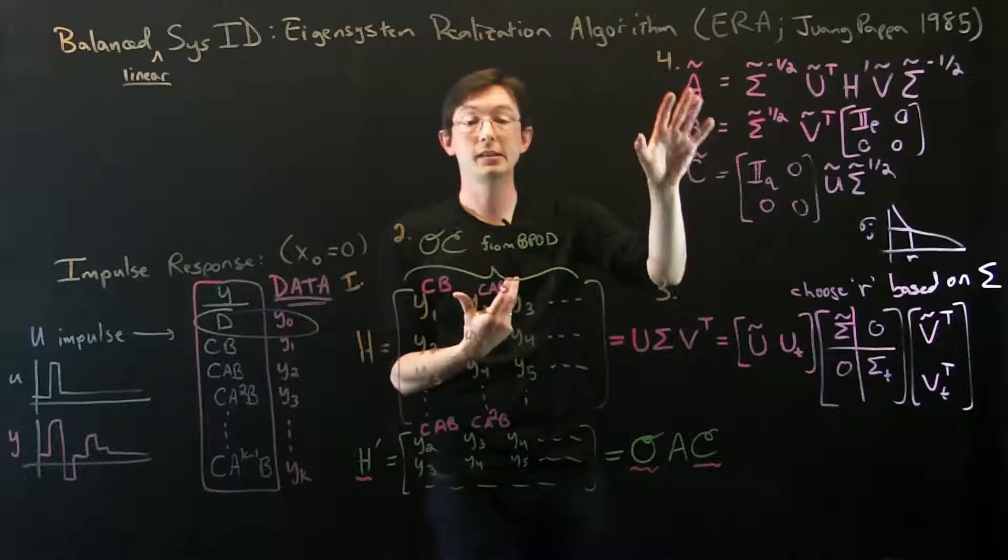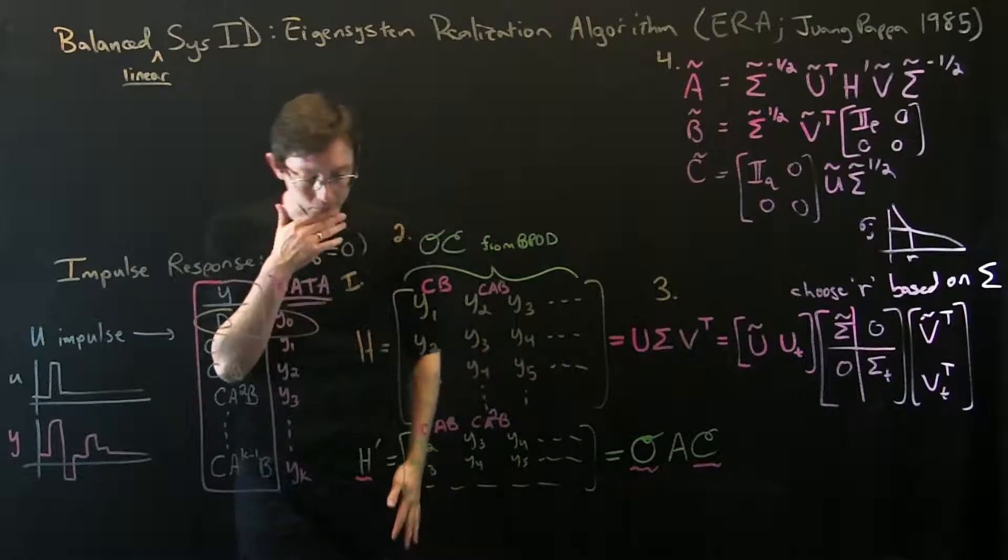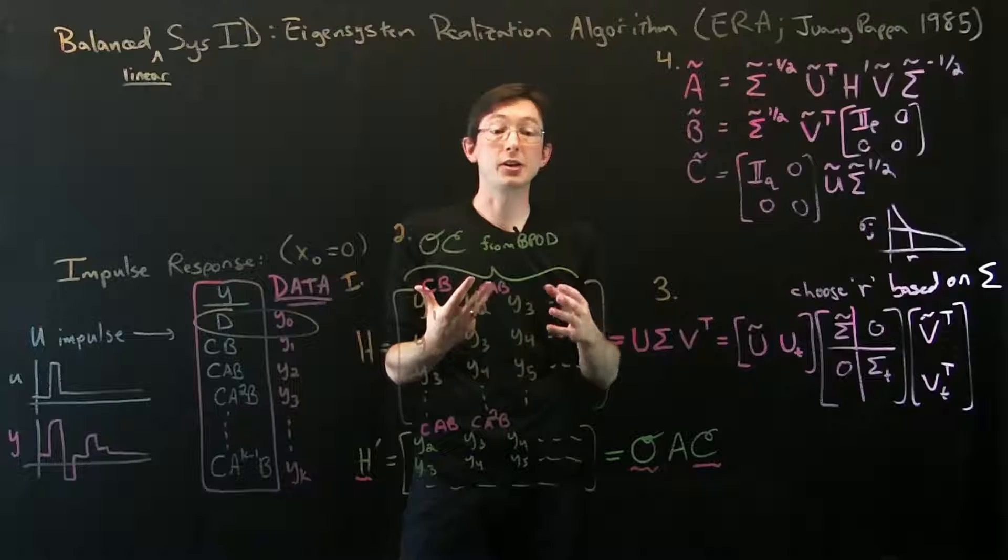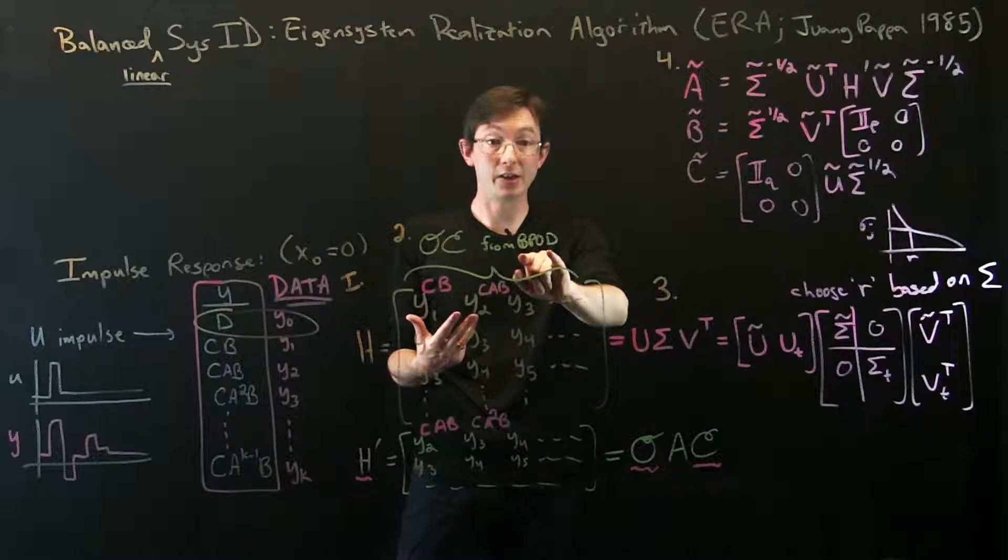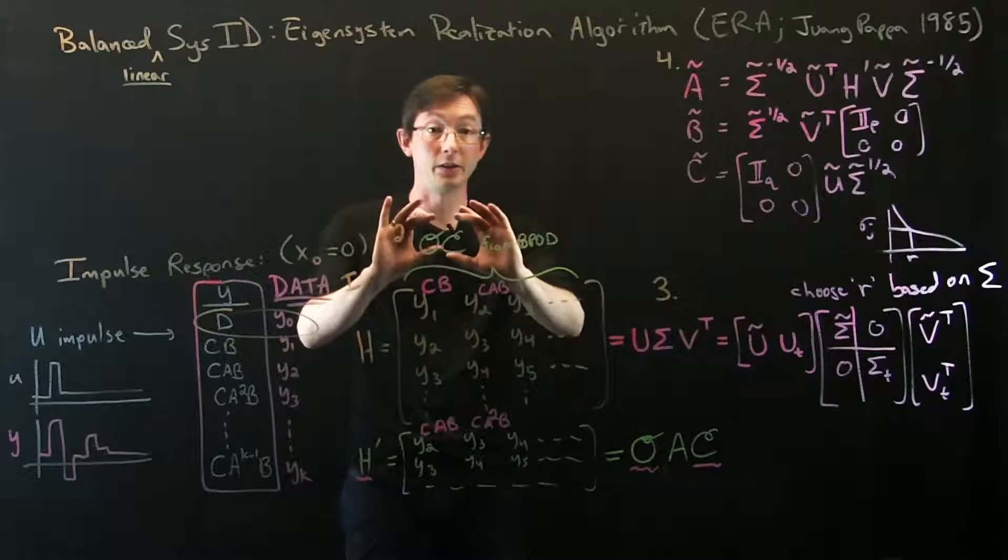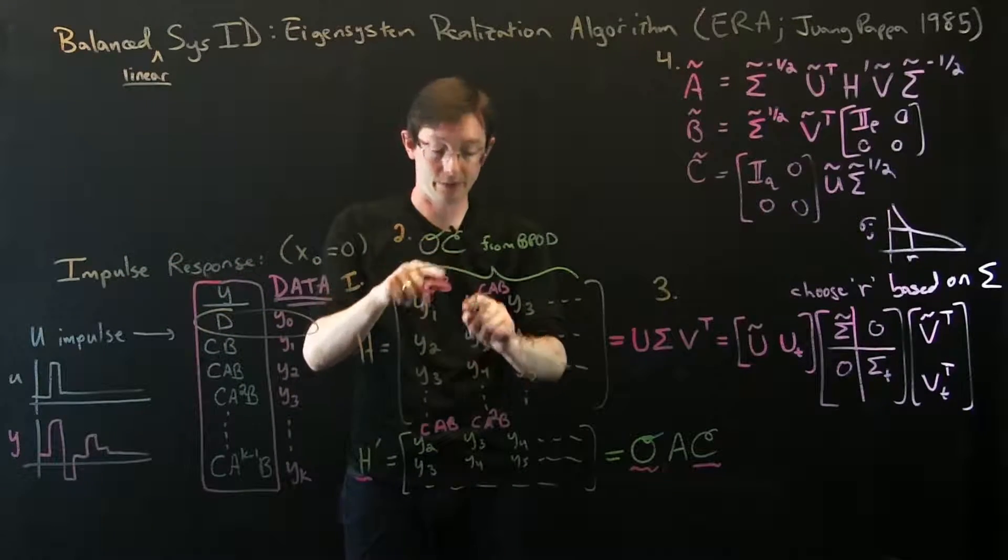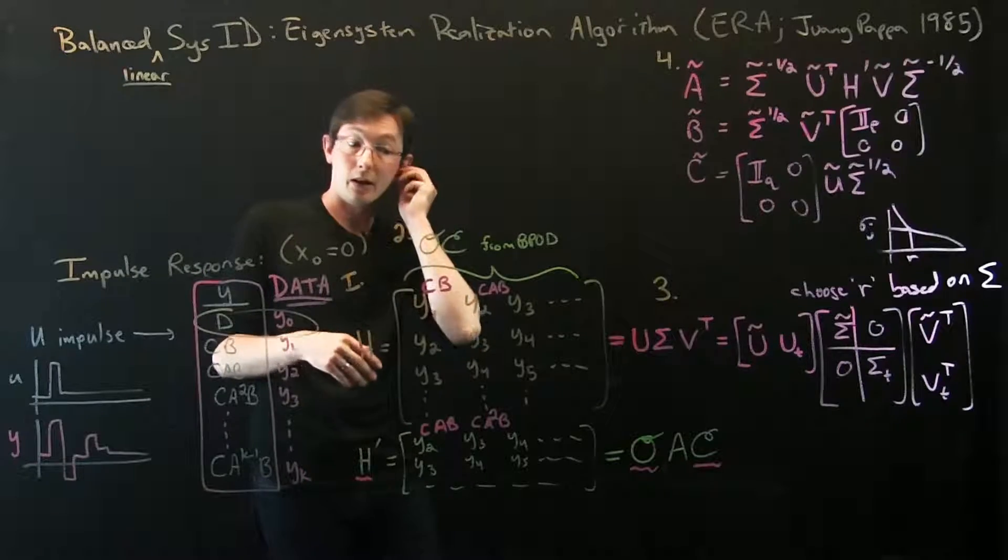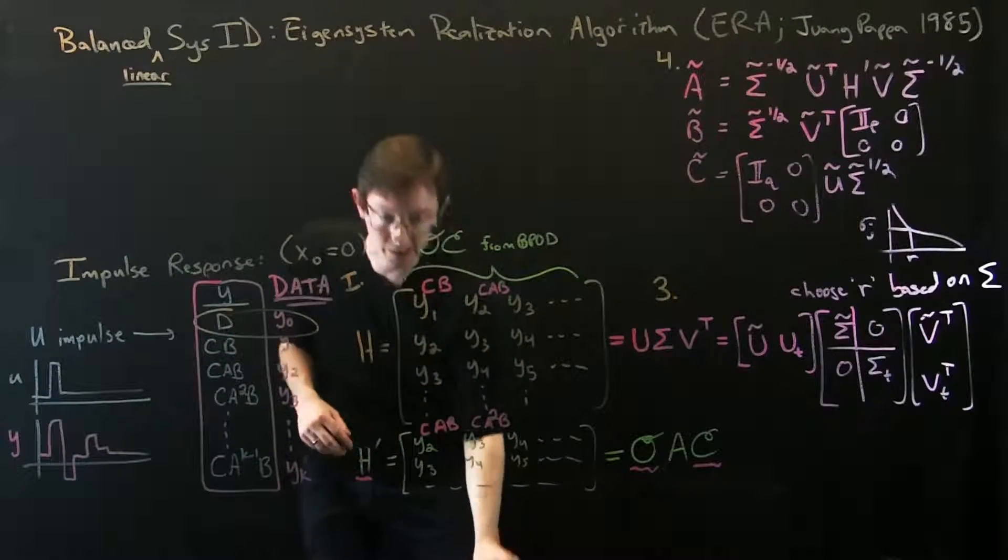There's a connection to balanced proper orthogonal decomposition and balanced truncation. You can basically take all of this data-driven stuff and write it in terms of direct snapshot C and adjoint snapshots O, and you can go through the math and figure out that it's the same.